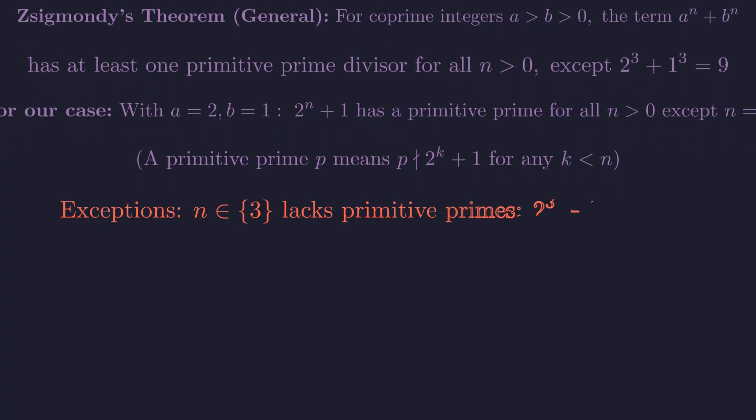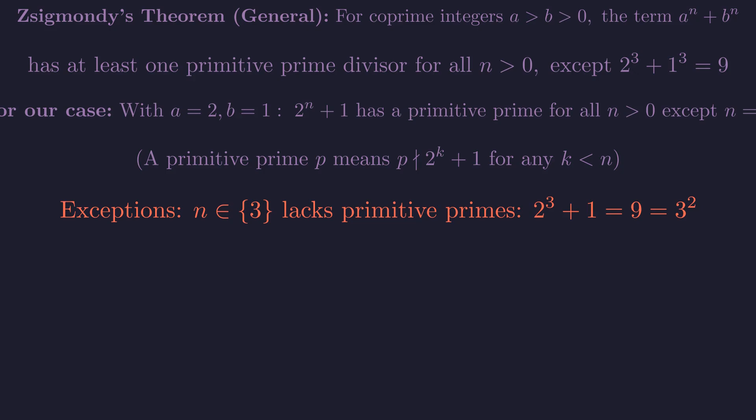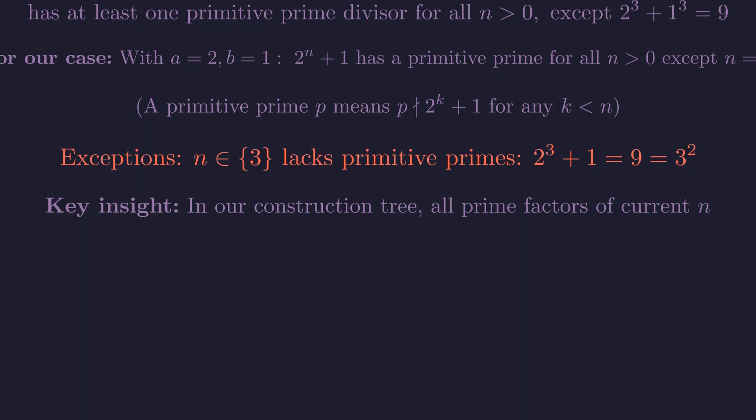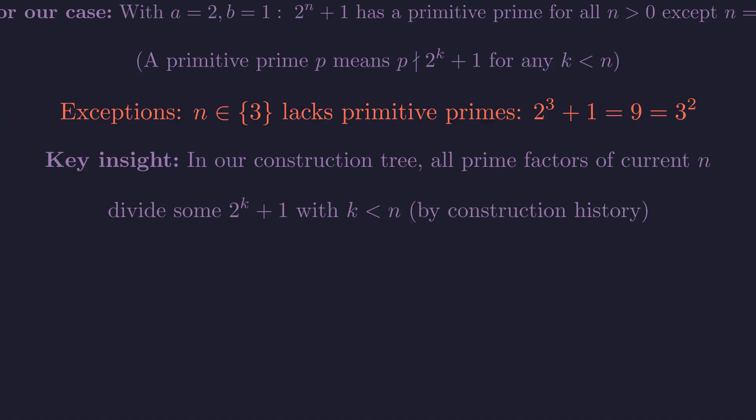A primitive prime p means that p does not divide 2 to the k plus 1 for any positive k less than n. The exceptional case is n equals 3, where 2 cubed plus 1 equals 9 equals 3 squared, which lacks primitive prime divisors. Here's the key insight connecting Zsigmondy to our construction. In our tree, all prime factors of any solution n we've constructed must divide sum 2 to the k plus 1, with k less than n, by the very history of how we constructed n.